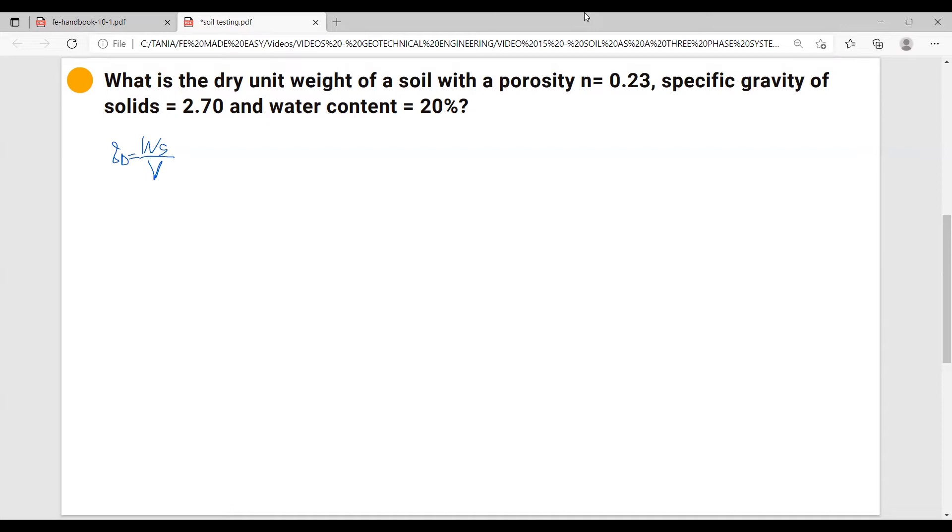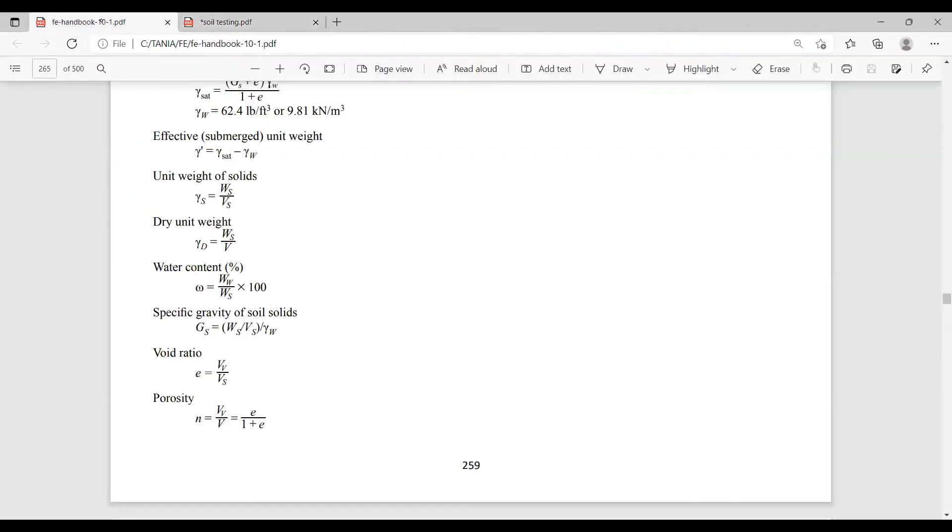So we have to calculate weight of solids and the volume. Let's look at the other things that we are given. We're given the specific gravity of solids. Let's look at the formula of specific gravity of solids - it equals to weight of solids over volume of solids over gamma water.